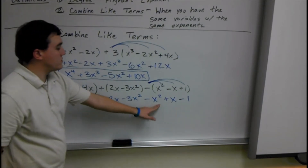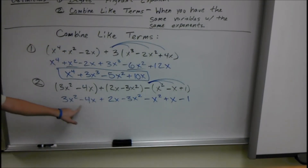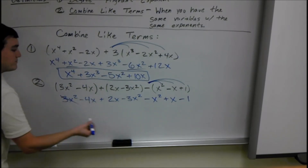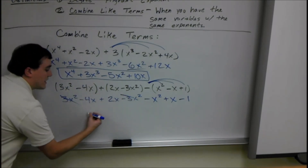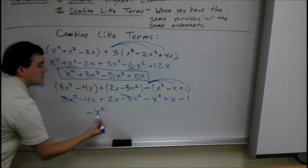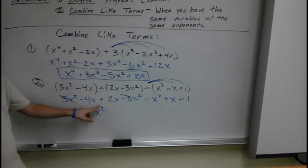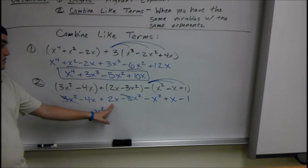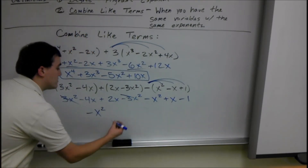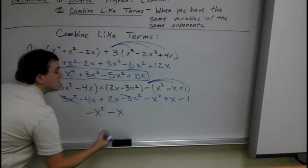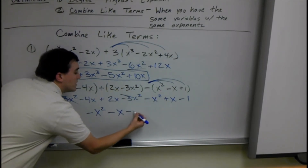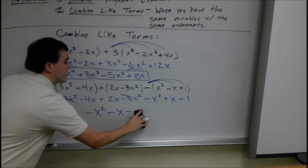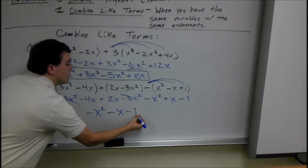Then we just combine like terms. We have 3x squared terms: 3x squared minus 3x squared, so all those cancel out. And then we have negative x squared, which stays because there's no other x squared term to combine. Then negative 4x plus 2x is negative 2x, plus x is negative x. And finally a negative 1 at the end. So in the end we get negative x squared minus x minus 1.